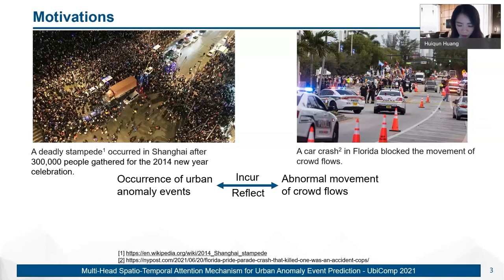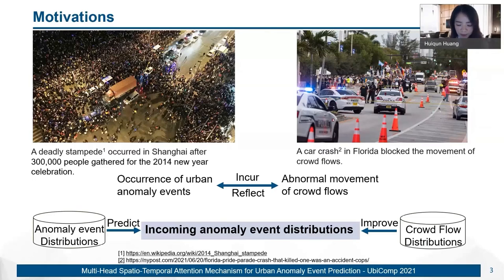We can learn from these examples that the occurrences of anomaly events always incur or be accompanied with the redistributions of crowd flows. Therefore, considering the impacts of crowd flows can improve the predictions of abnormal events. Inspired by the correlations between abnormal events and crowd flows, in this paper we aim at forecasting the citywide incoming abnormal event distribution by utilizing data of both abnormal events and crowd flows.